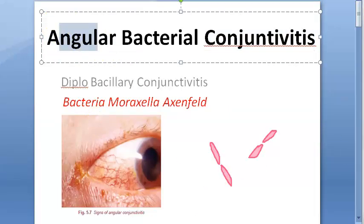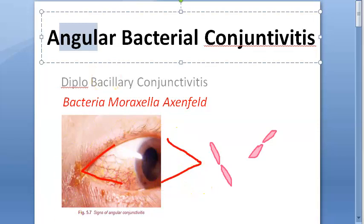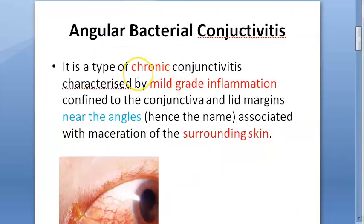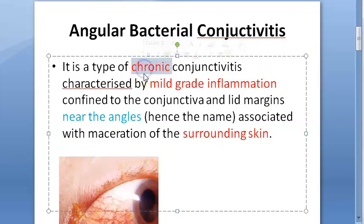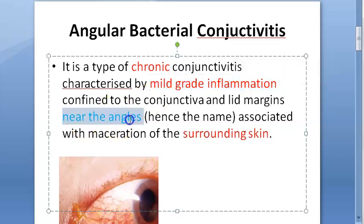The word 'angular' refers to the angles of the eye — the canthi — which are more affected in this condition. Angular bacterial conjunctivitis is a chronic conjunctivitis, meaning there is a mild-grade inflammation running chronically near the angles of the eye.